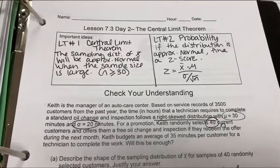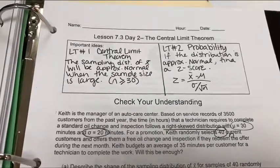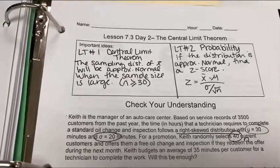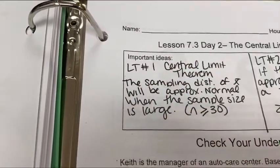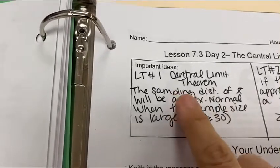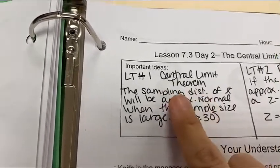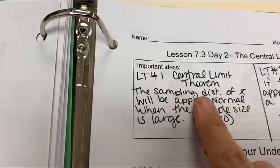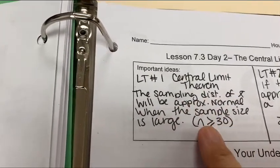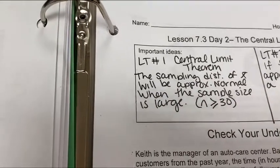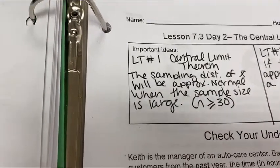Hey guys, welcome. So we're talking about the central limit theorem today. This was our first learning target and the idea is regardless of the shape of the sampling or the raw data, the sampling distribution will be approximately normal if the sample size is large enough. And we saw that in the little tiny URL today.